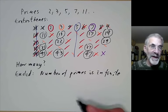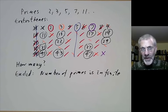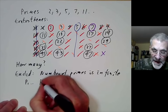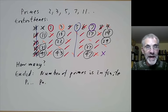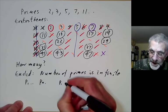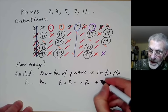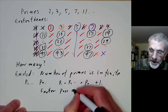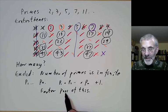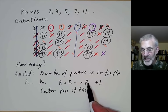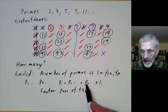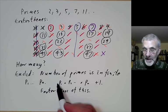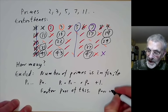Actually Euclid didn't say the number of primes is infinite because the Greeks didn't really like the concept of infinity. What Euclid actually said is something equivalent: if you take any finite set of primes p₁ up to pₙ, you can find another prime not in this set. What he did was take the product p₁ × p₂ × … × pₙ and add 1 to it. We take a prime factor p_{n+1} of this, and notice it can't be any of p₁ up to pₙ, because if it were, it would divide both this product and this number, so it would have to divide 1. So p_{n+1} is a new prime.